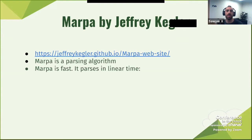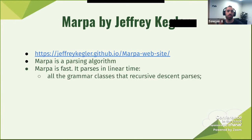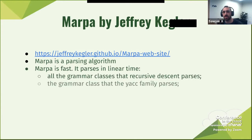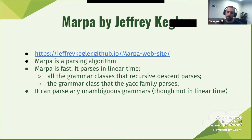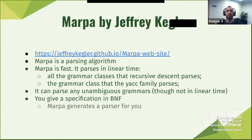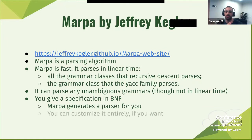In linear time, it will parse all the grammar classes that recursive descent parses and the grammar classes that the Yacc family parses. It can even parse an ambiguous grammar, so we can parse things into more than one option — though obviously that wouldn't be linear time. It receives a specification in BNF and applies that algorithm; it generates a parser from the BNF. With Marpa, you can write a full-fledged BNF and get a full parser back. You can customize every single bit of it — every node, before, after, during.